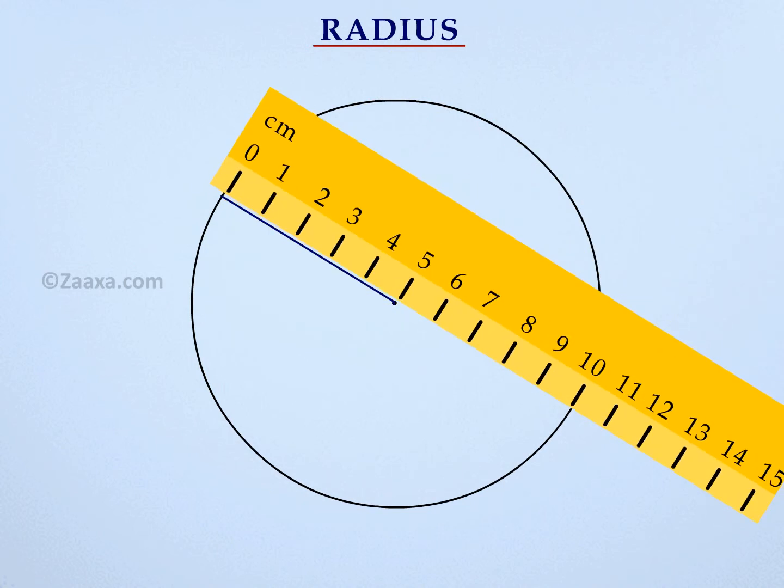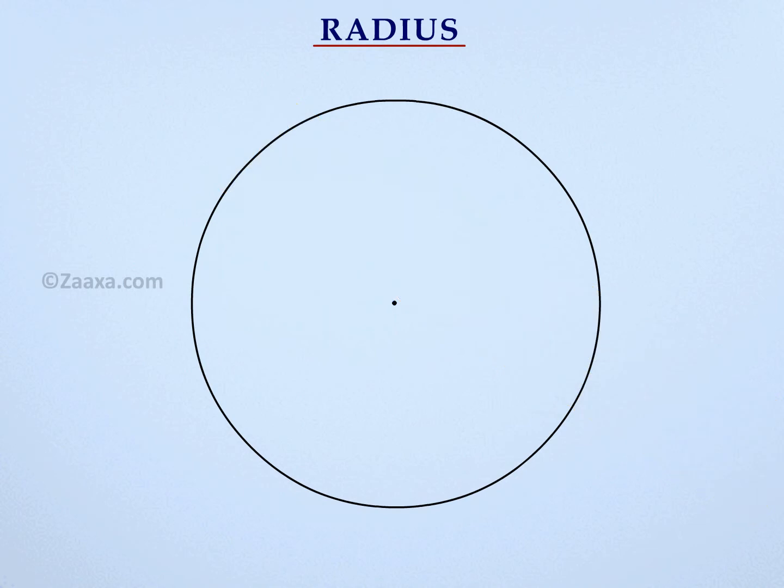We usually denote the center of the circle as O. Let us now mark a point P on the circle and measure OP. We see that OP is equal to 5 cm.